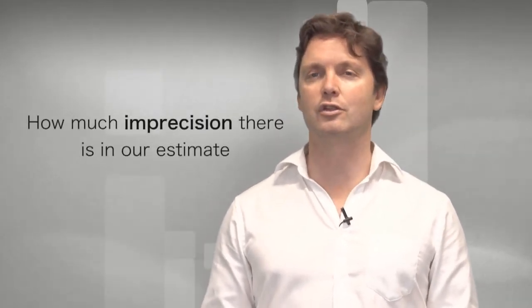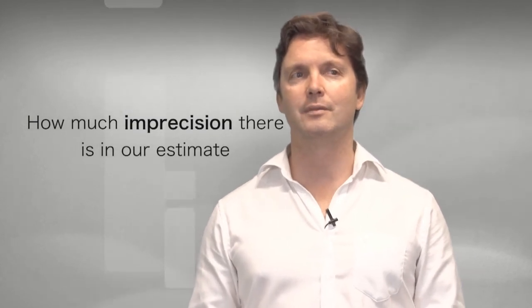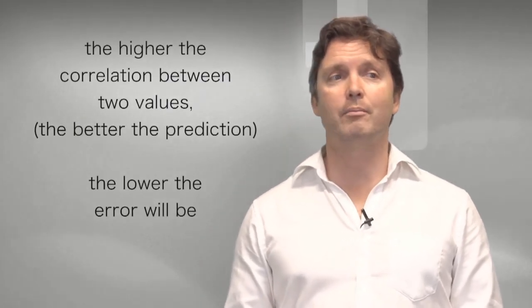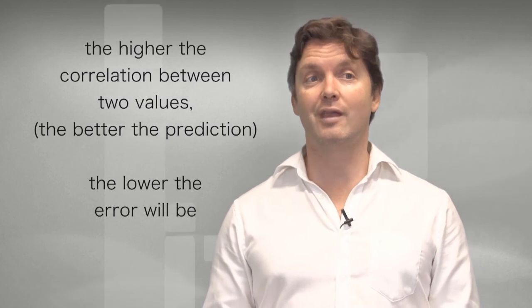Now the standard error of the estimate tells us how much imprecision there is in our estimate. If the correlation was perfect, so in other words, the number of hours slept perfectly predicted wellbeing, then all the data points would align themselves along the regression line, and the residual would be zero. So as you might expect, the higher the correlation between two values, and the better the prediction, the lower this error will be.